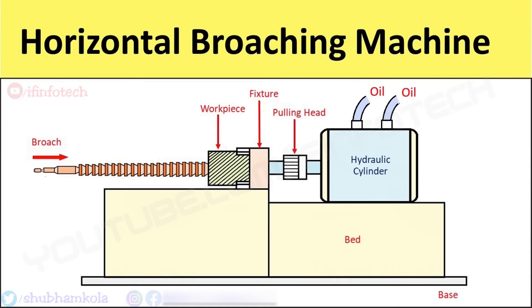In the horizontal broaching machine, interchangeability of components can be done due to tolerance obtained in range.